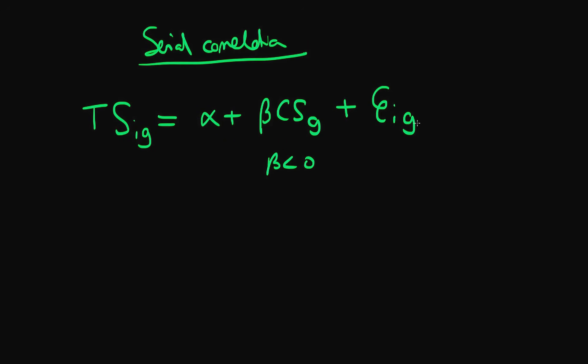But classroom size doesn't determine how well an individual does overall. There are also a whole host of other individual and classroom-specific factors. This error here might be composed of classroom-specific factors other than classroom size, like teacher quality or school quality, as well as individual-specific factors which I'm calling E_i in this notation.